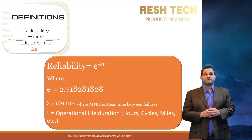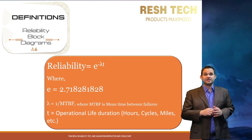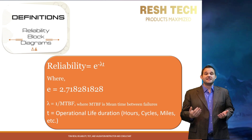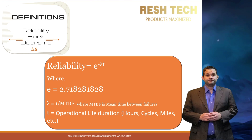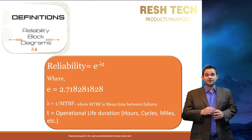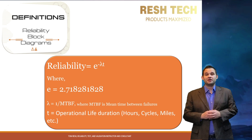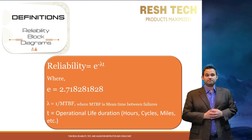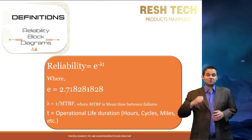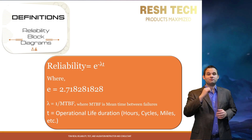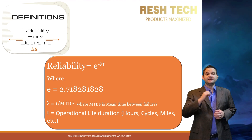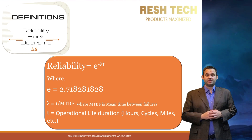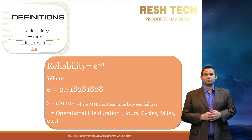So what do we mean by reliability? Reliability is expressed as the natural logarithm e with the exponent negative lambda times t, where e equals 2.718... Lambda is the failure rate, which is 1 over MTBF, which is mean time between failures. T is the duration of the operational life of the system in hours, cycles, miles, and so forth.